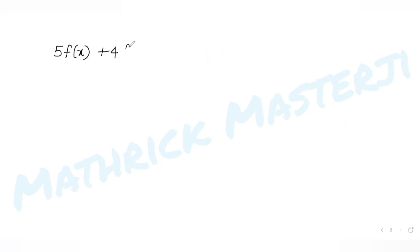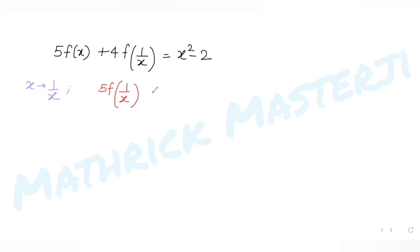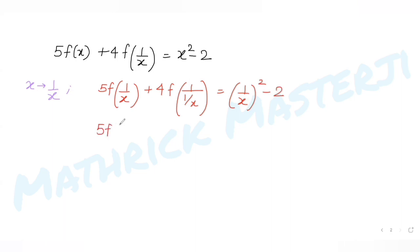We are given that 5·f(x) + 4·f(1/x) = x² − 2. To get a second equation, we substitute x with 1/x everywhere. Doing that substitution, we get 5·f(1/x) + 4·f(1/(1/x)) = (1/x)² − 2, which simplifies to 5·f(1/x) + 4·f(x) = 1/x² − 2.